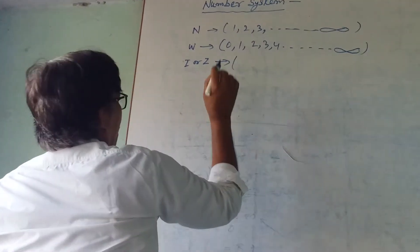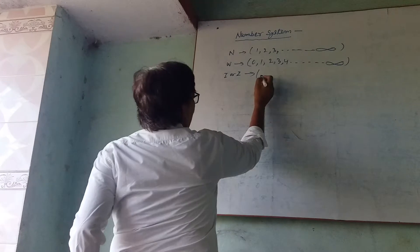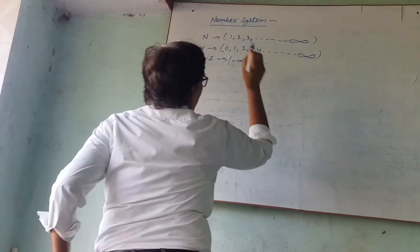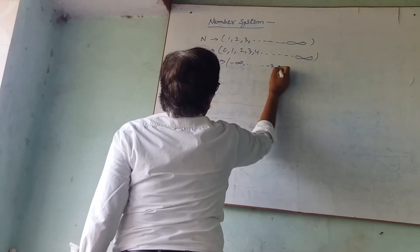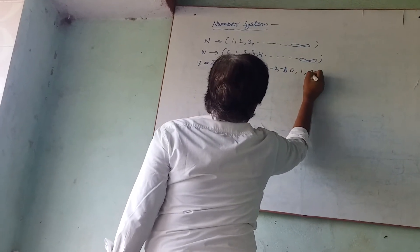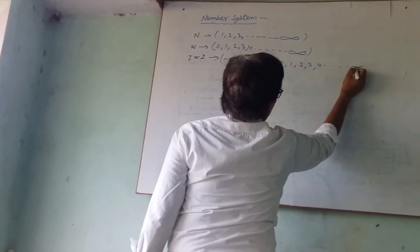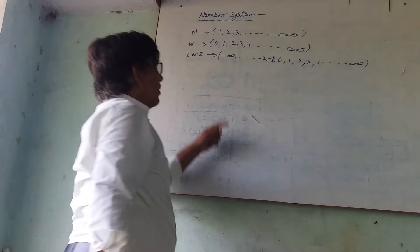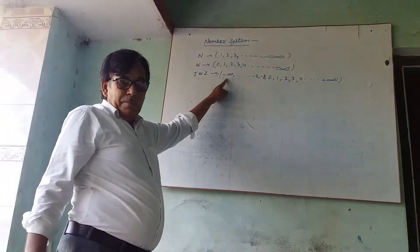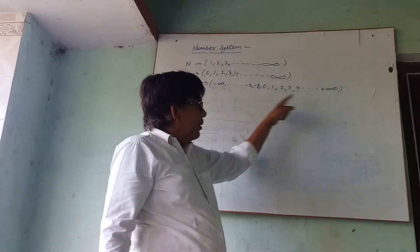Integers, denoted by I or Z. It is the set of all positive and negative numbers: { ..., -4, -3, -2, -1, 0, 1, 2, 3, 4, ... } from minus infinity to plus infinity. There is no smallest integer and no largest integer.